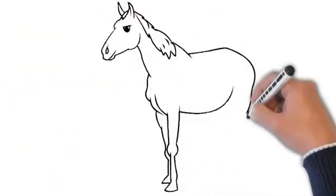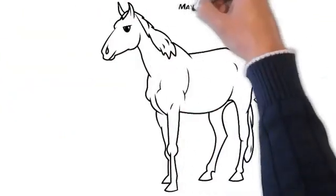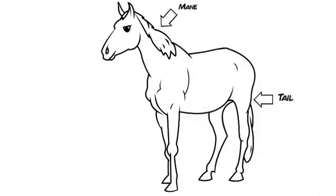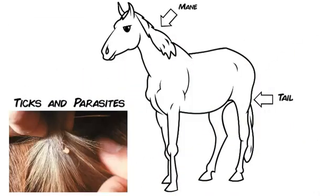We will start off with a couple of easy ones, the mane and tail. When grooming these areas, be mindful to look for any parasites such as ticks that like to hide under the mane.